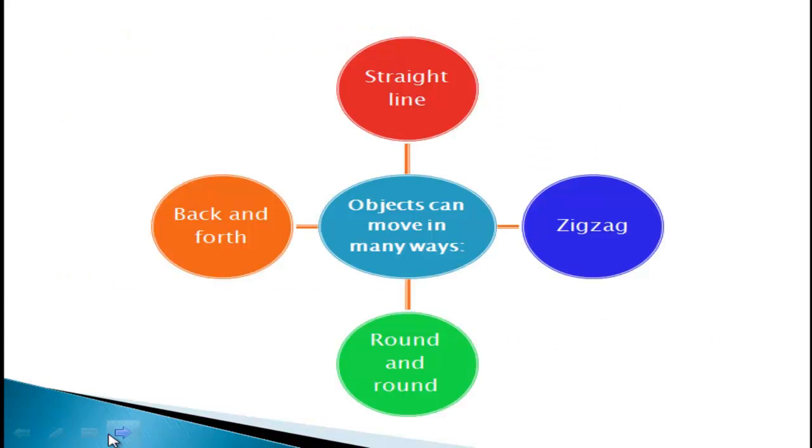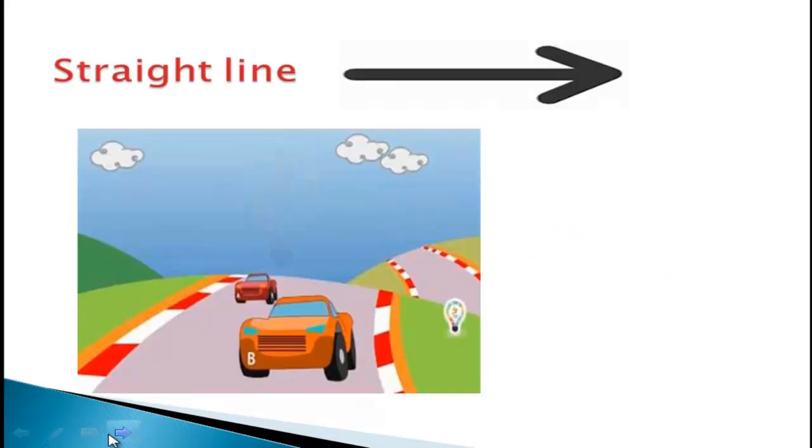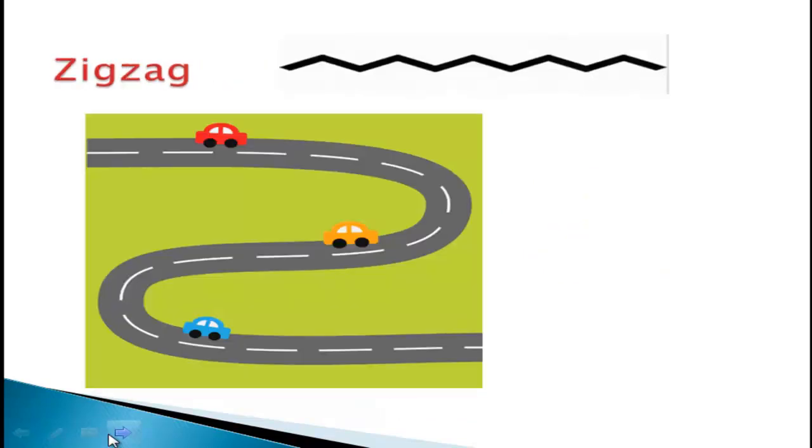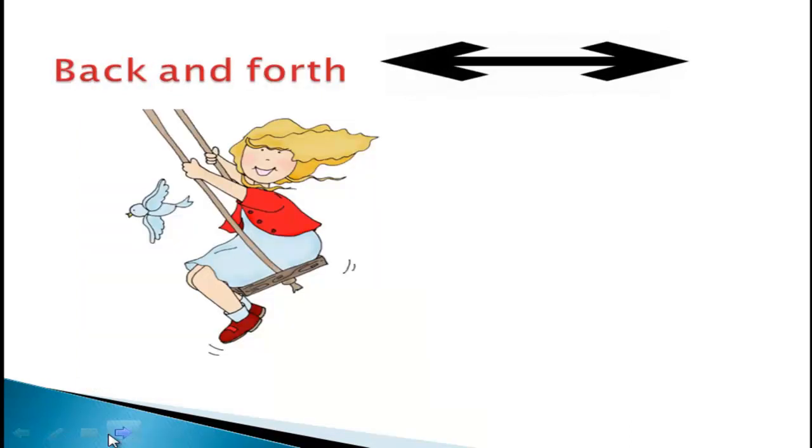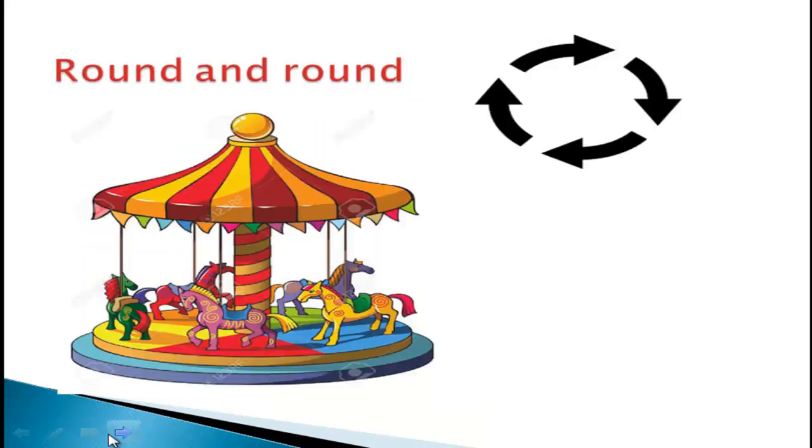Objects can move in many ways, which are straight line, zigzag, back and forth, round and round.